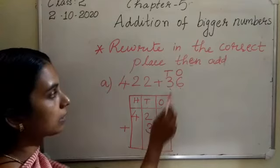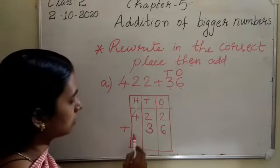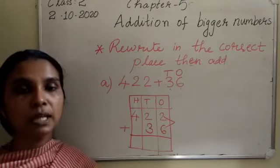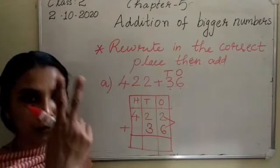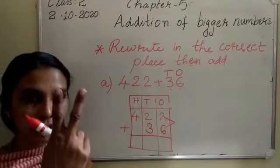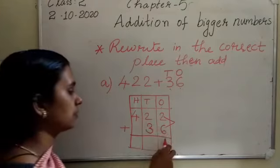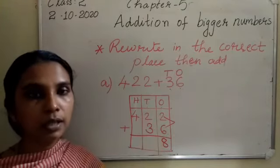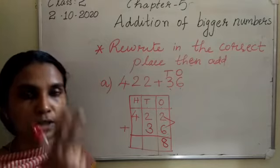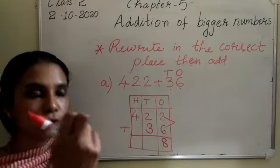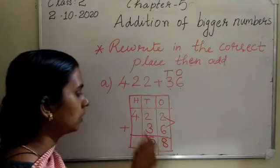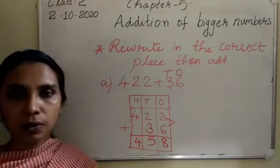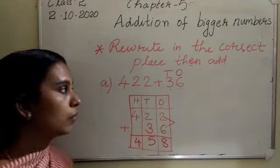Write each digit in the correct place. Then add: 6 plus 2 in the 1's place — 6 in your mind, 2 fingers after 6 — 7, 8. Then 2 plus 3 in the 10's place — 3 in your mind, 2 fingers after 3 — 4, 5. Then bring down the 4 from the 100's place.